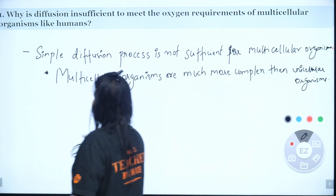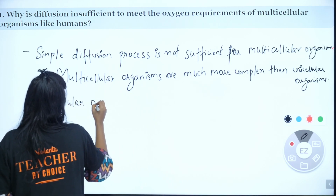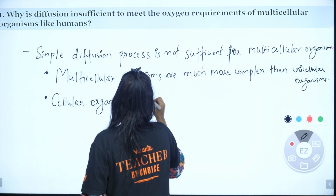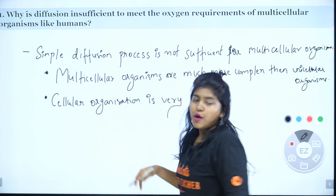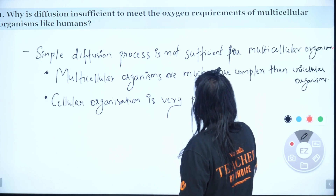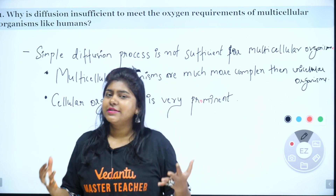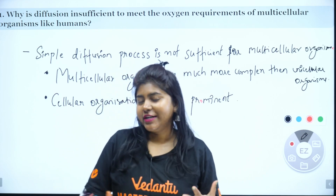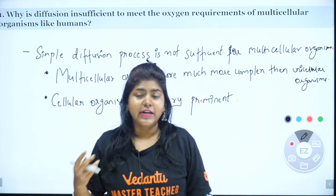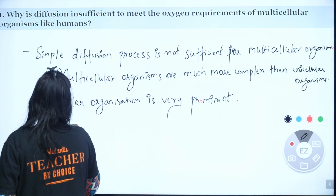Cellular organization is very prominent. In the cellular organization, cells form tissues, tissues form organs, organs form organ systems, and that is how multicellular organisms like human beings are formed. That is why simple diffusion is not sufficient and different processes are present in multicellular organisms.